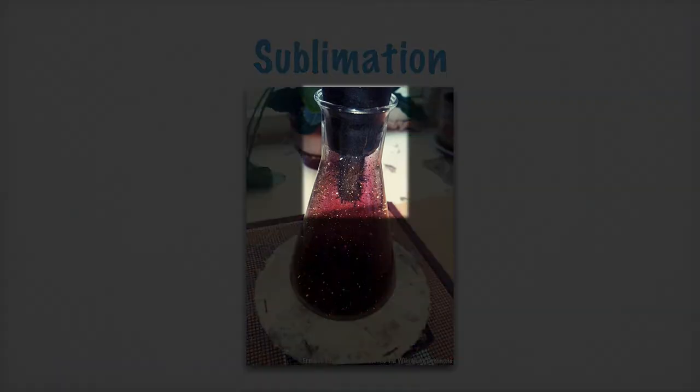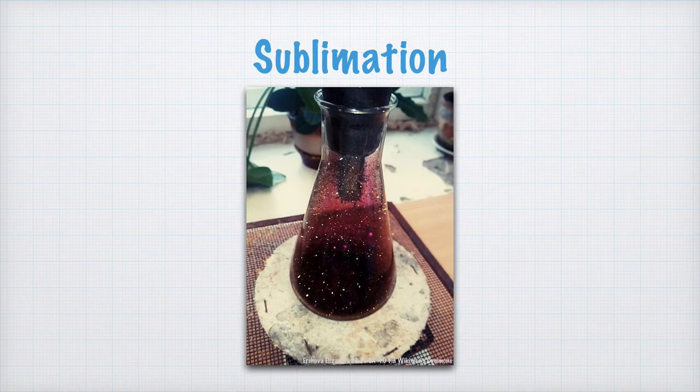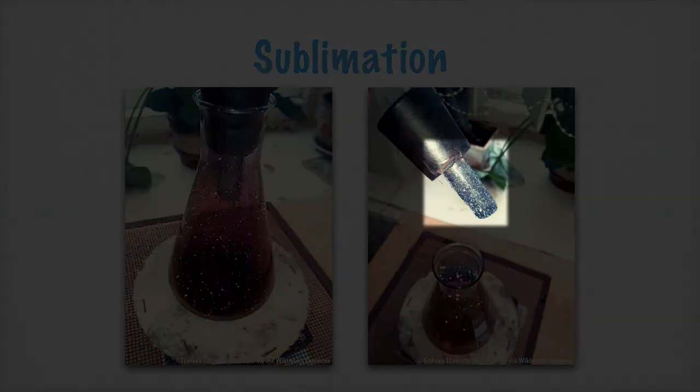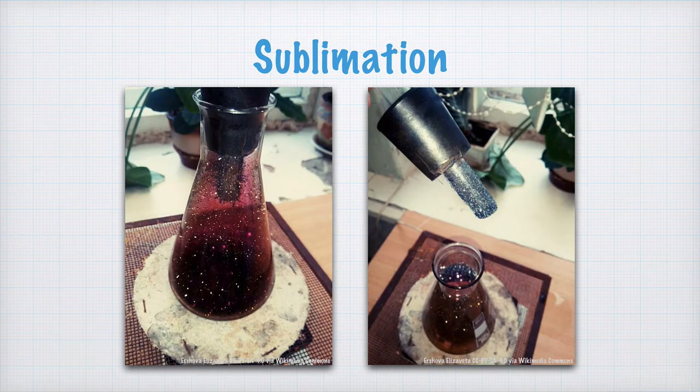Note, that through the cork of this e-flask, a test tube with some ice has been pushed through. This causes the iodine to form a deposit on the outside of the test tube. Look here. Sometimes, this is called that iodine resublimes, but I think deposits is a better term.